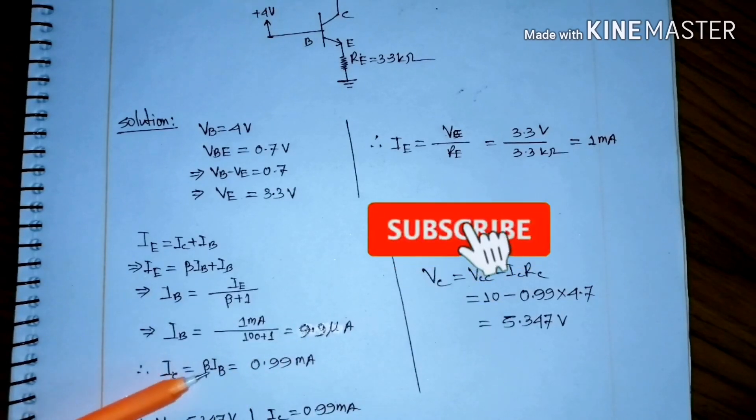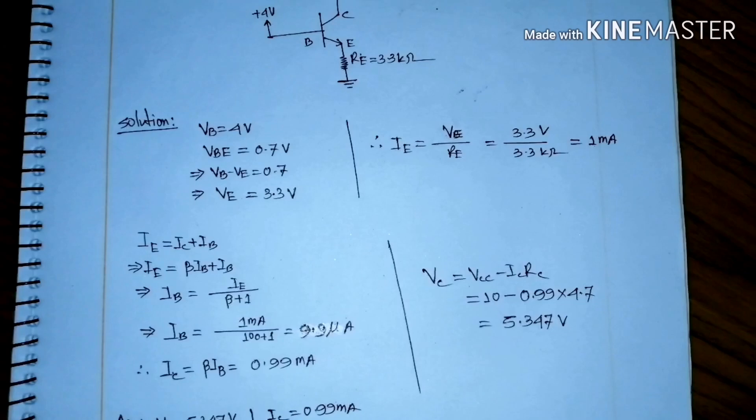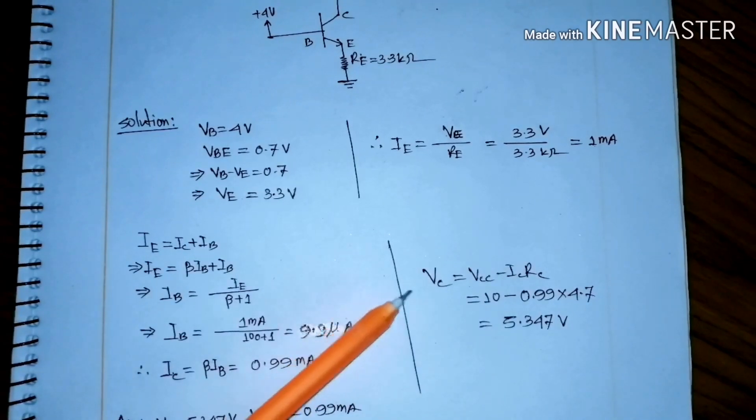Now, IC equals beta IB, which is 0.99 milliamperes. IC and IE are approximately the same. VC equals VCC minus IC times RC, very simple.